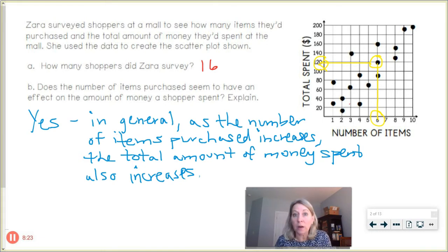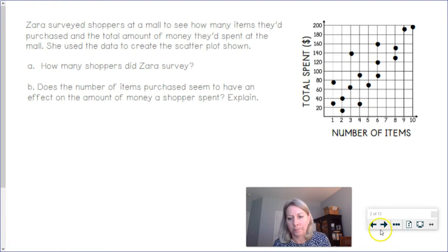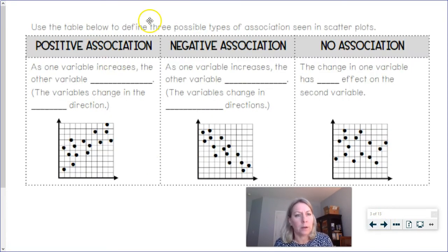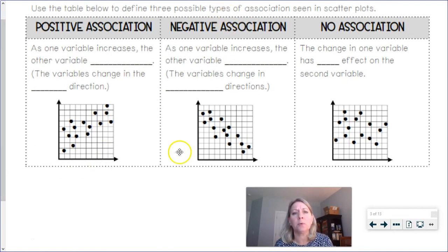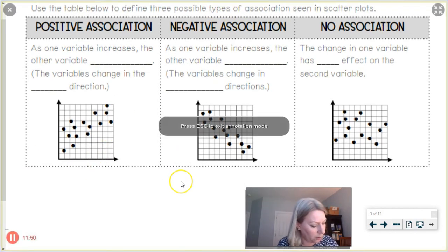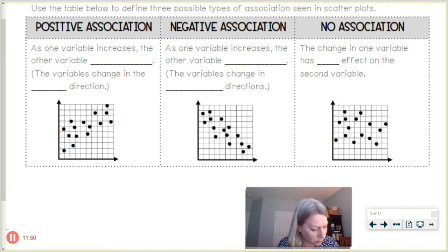All right let's move on. Let's talk a little bit about how things could be associated on a scatter plot next. All right, so we're going to look at this table here and we're going to define three possible types of association, so let me just highlight types of association that could be seen in a scatter plot. Please box or highlight what I do.